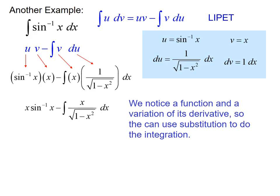And hopefully what you notice here is we are set up for using integration by substitution, because we have, if we let u equal 1 minus x squared, that derivative is negative 2x, which is just a constant multiple of x.